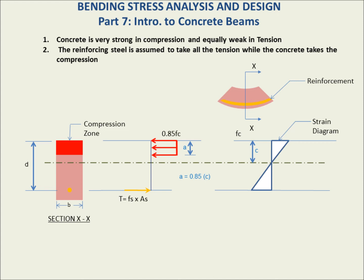Let's explicitly define our tension and compression. Tension T equals Fs times As — the stress in the steel times the area of the steel. Compression C equals 0.85 FC times depth A (which equals 0.85C) times the width B of the beam. From equilibrium, tension equals compression, so: Fs·As = 0.85·F'c·A·B.